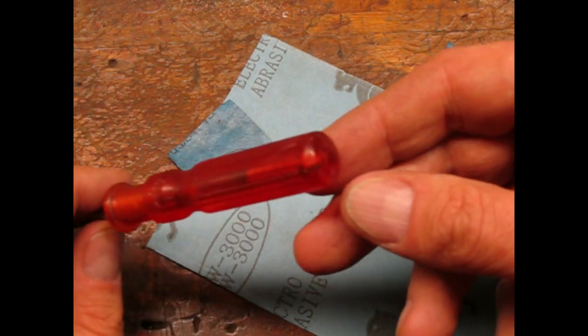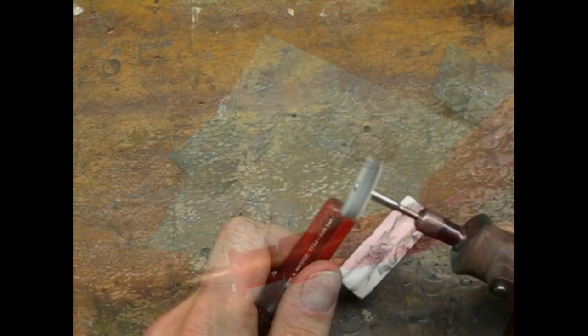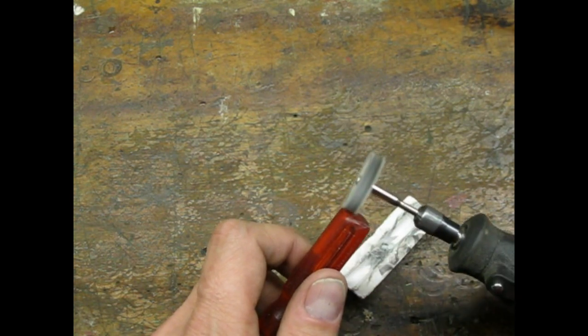It looked pretty good after sanding down to 3000 grit. A careful polishing with the Dremel was the final touch.